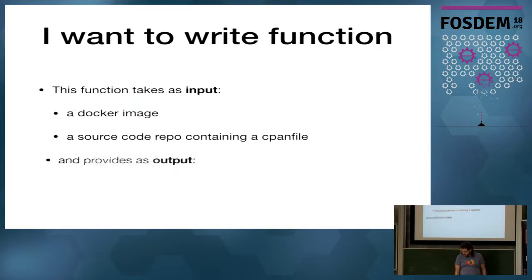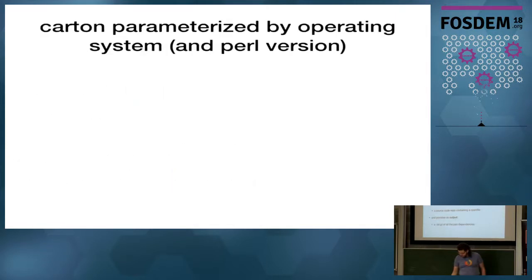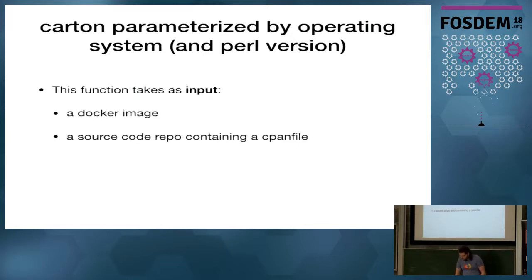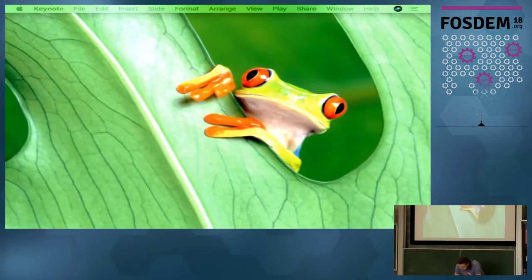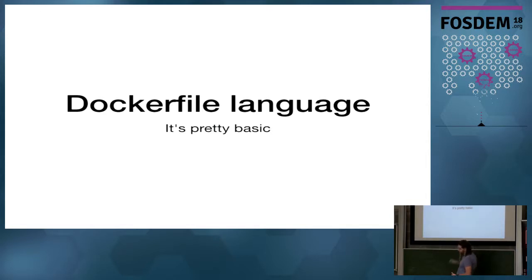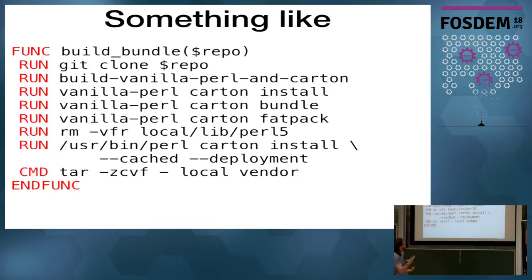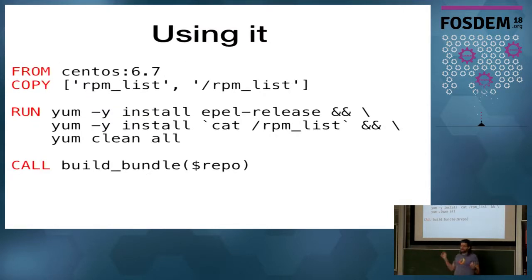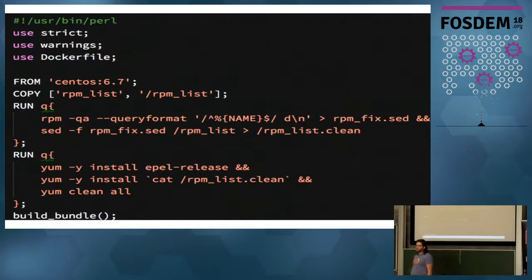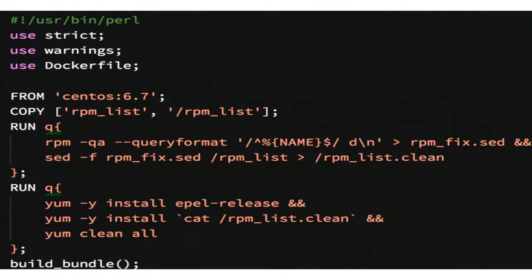So I wanted to modify the Dockerfile language. I thought this would have been fun to create, like, a Dockerfile function that is parameterized over the Git repo. But I didn't actually end up doing that. I thought about it. But I did something kind of worse. I kind of wrapped Docker in Perl. Well, I made a DSL that generates a Dockerfile, and that lets me use Perl subroutines to have repeatable environments.